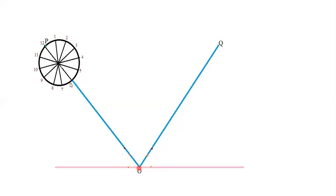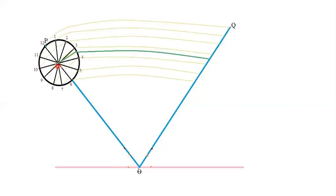Keep your compass at O and place the other end at point 6, then cut an arc. Similarly, keep compass at O and place at 7, then 5, till the end. At center, keeping compass at O and measuring till center gives you the green line. Note that 7 and 5 coincide, 8 and 4 coincide, 9 and 3 coincide, 10 and 2 coincide, 11 and 1 coincide, and finally 12.